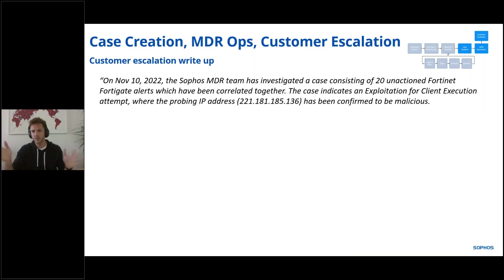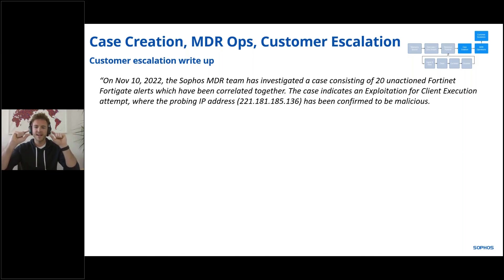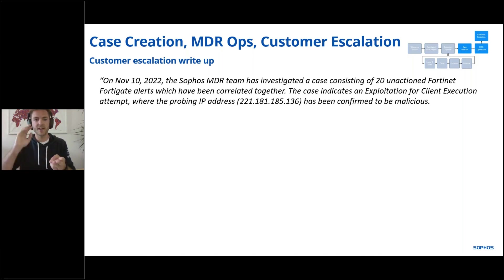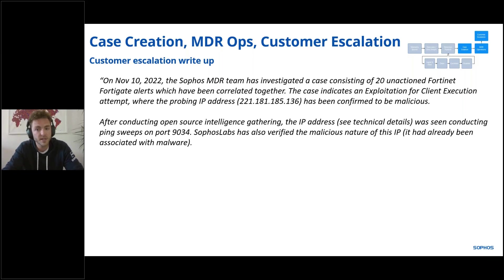This is the actual case write-up that, if you're in Collaborate, would be sent to you guys. So on November 10th, 2022, the MDR team investigated a case consisting of 20 unactioned FortiGate alerts which were grouped together. The case indicates an exploitation for client execution attempt where the probing IP address has been confirmed to be malicious. After conducting some OSINT, the IP address was seen conducting ping sweeps on that port. Sophos Labs has also verified the malicious nature of this IP — it's already been associated with malware.